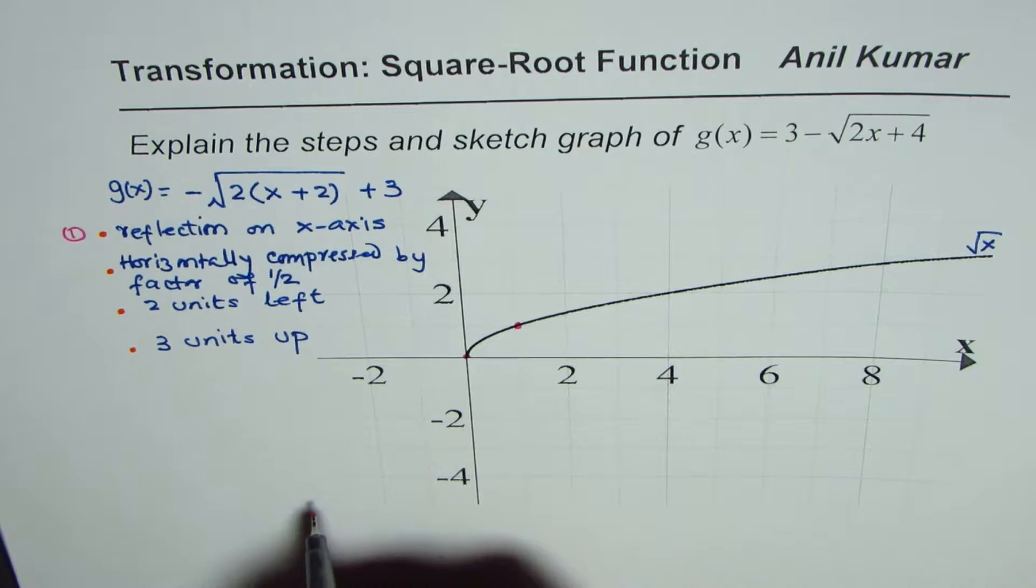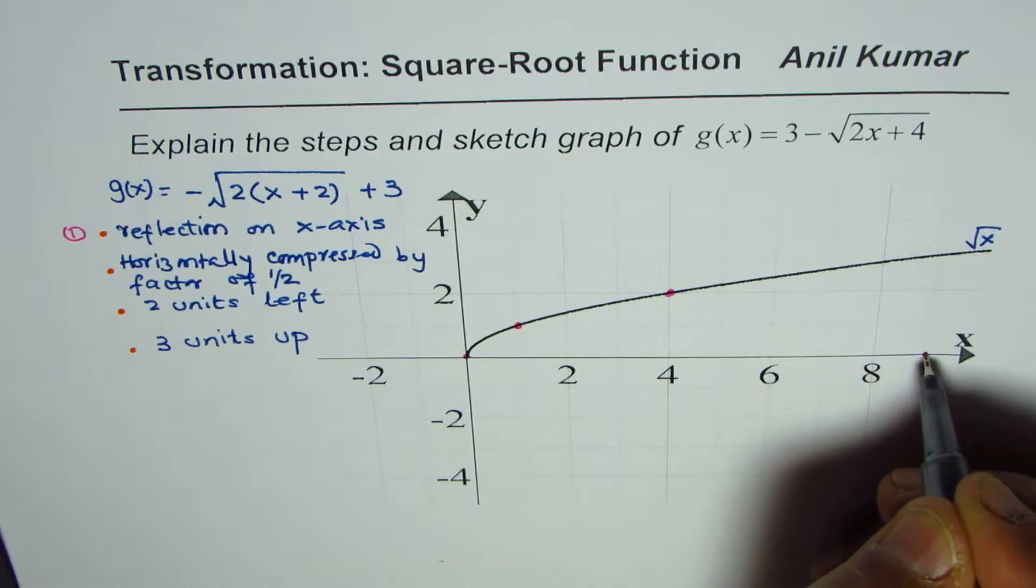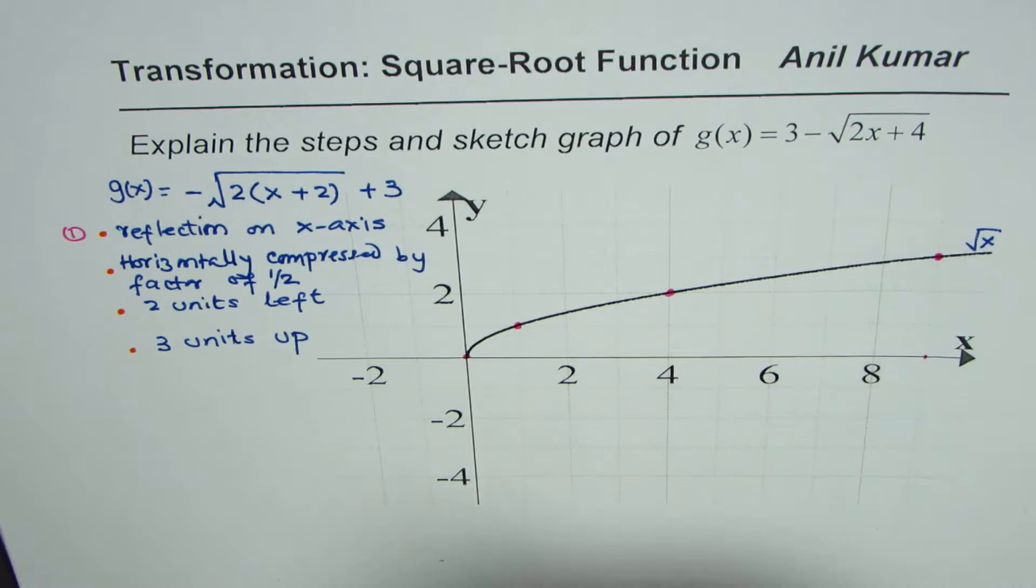And then we have (4, square root is 2) and (9, square root is 3). So these are the critical points which we are going to analyze. These are the key points which we are working with.